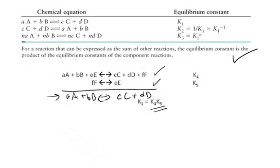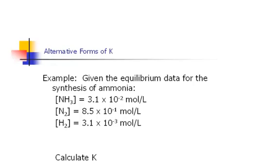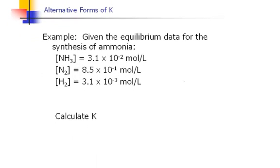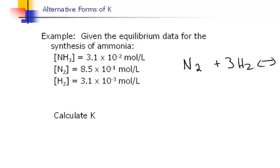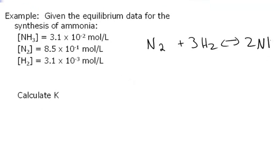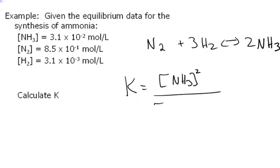Let's take a look at an example to see how we can manipulate the value of K. Say you're given equilibrium data for the synthesis of ammonia. The chemical reaction is: one mole of nitrogen plus three moles of hydrogen in equilibrium with two moles of ammonia. We can calculate KC — since this is a gas-phase reaction but we're using concentration data — where KC equals the concentration of the product raised to the power of its coefficient, divided by the concentrations of the reactants each raised to their own coefficients.